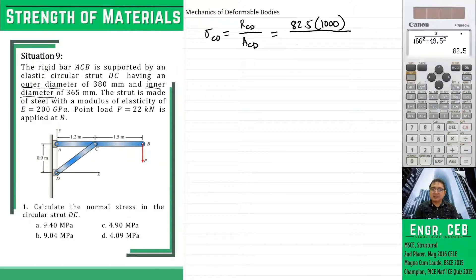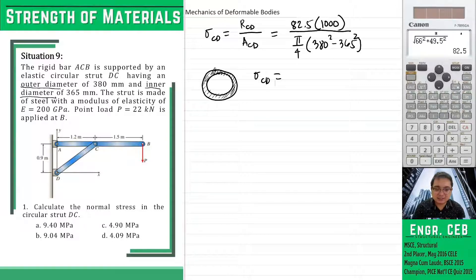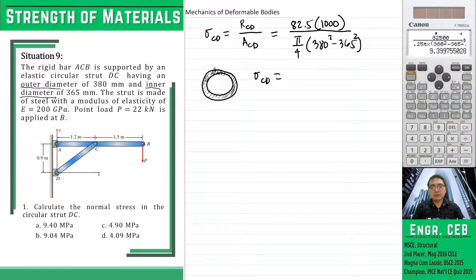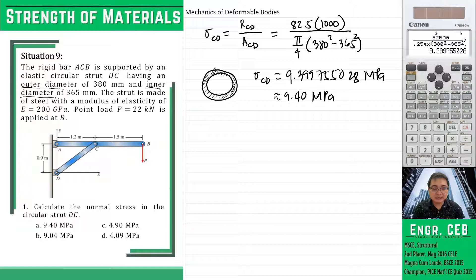In determining its area, we just need to subtract the areas of the two circles, pi over 4 times 380 squared minus 365 squared. The normal stress in strut CD is 9.399755028 MPa. That is letter A.